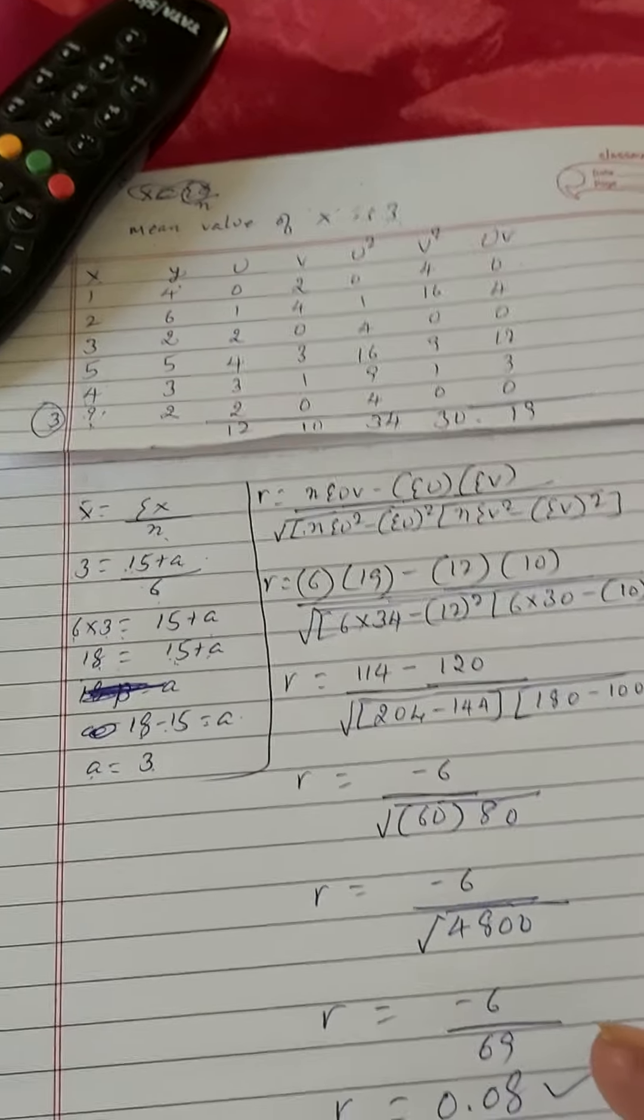Now let us interchange the value of 15 to LHS side. Right now 15 is a plus value, when we take it to LHS side it will be termed as a minus value. Therefore 18 minus 15 is equal to a. If we deduct 15 from 18, the value we get is 3. So a is equal to 3. I have taken 3 here. This is 3 and y has given the values.